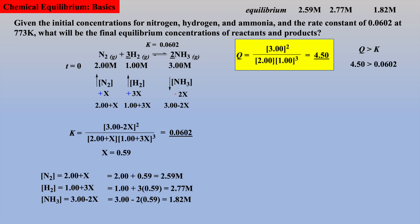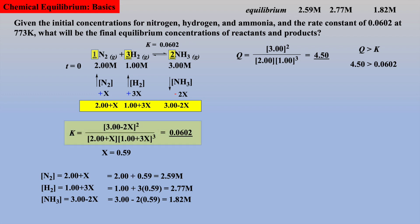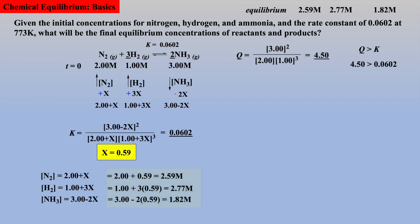To summarize: we first calculated a Q value given initial concentrations, compared Q to K to predict shift direction, then expressed the change by examining the stoichiometric coefficients. We placed our new expressions into the law of mass action and solved for X, and deduced final concentrations which matched our measured final equilibrium concentrations.